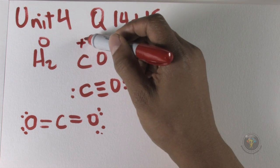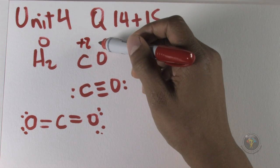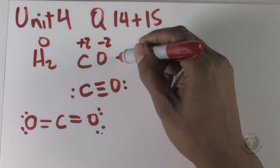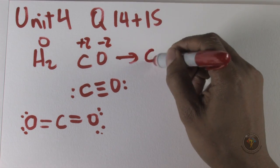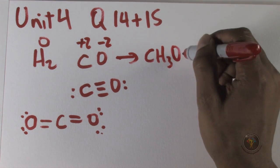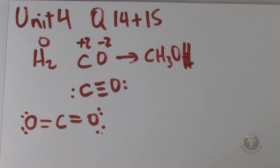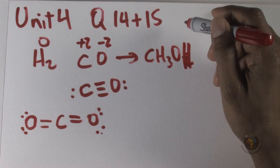And so carbon actually has in carbon monoxide according to those rules would be plus two and therefore the oxygen would be a minus two. Of course this is neutral. And then we look at CH3OH.